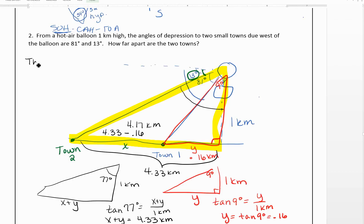So we see the distance between the towns is 4.17 kilometers. So the distance between the two towns is 4.17 kilometers. Okay, so these were just two examples of how we can use trigonometry to solve problems.